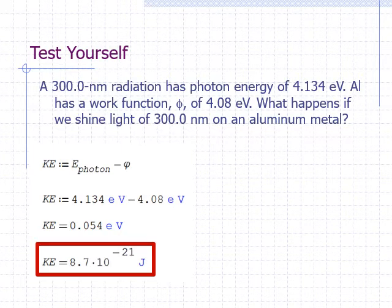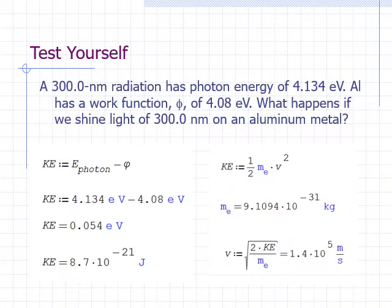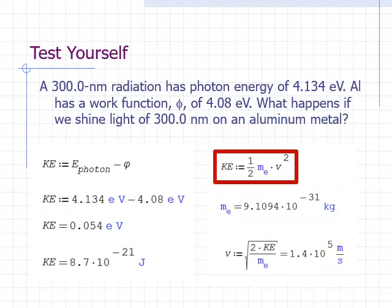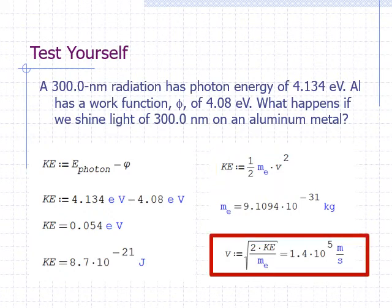We can also calculate the speed of the electron. Recall that kinetic energy is equal to one-half times mass times the square of the speed. The mass of an electron is 9.1 times 10 to the negative 31 kilograms. We can rearrange the equation for kinetic energy to solve for the speed v, and we get v equals the square root of 2 times the kinetic energy divided by the mass of the electron. Plugging in the kinetic energy and the mass of the electron, we get an electron speed of 1.4 times 10 to the fifth meters per second.